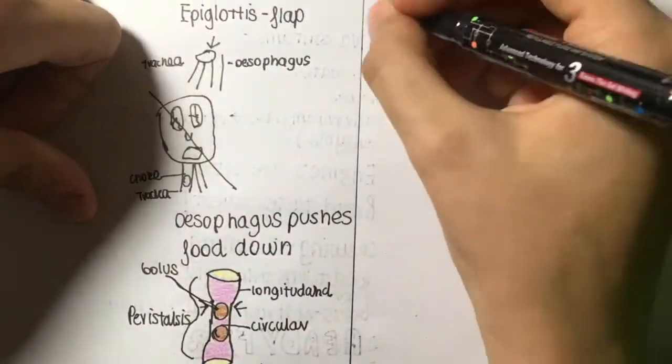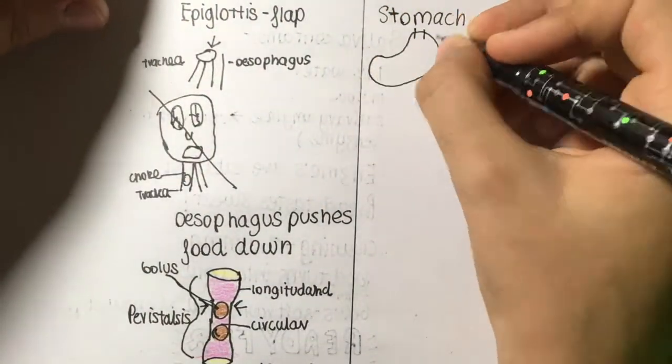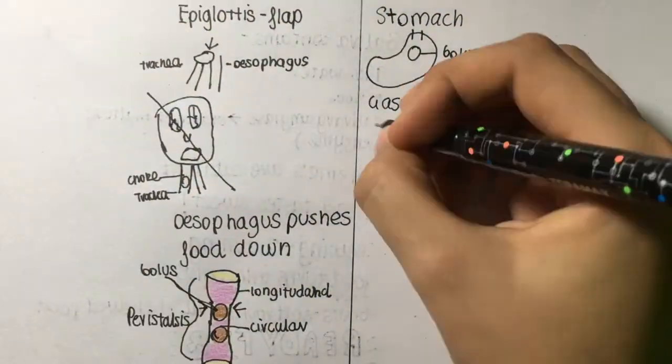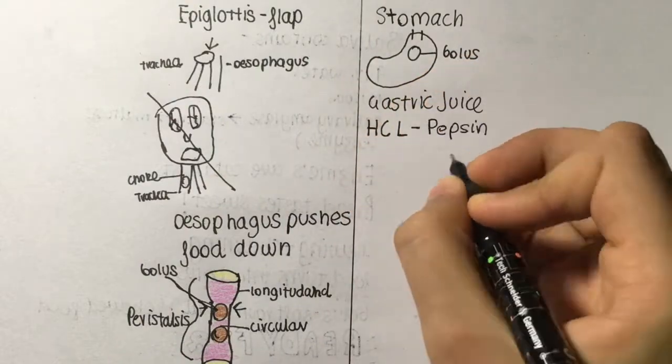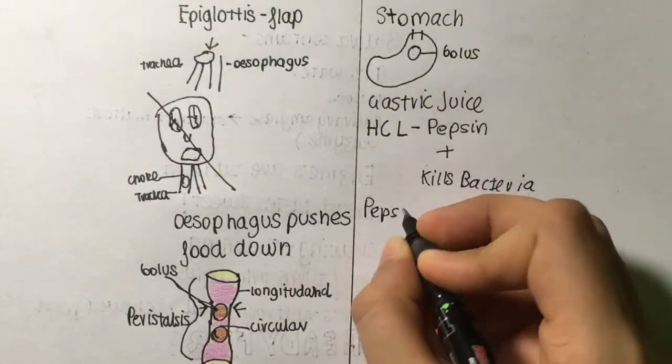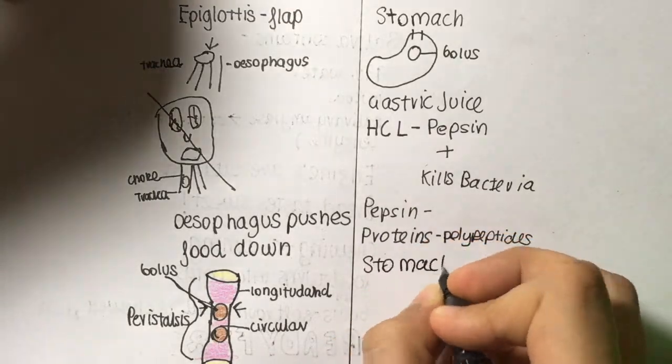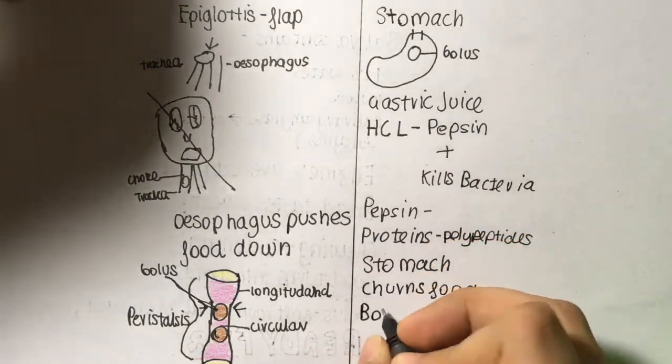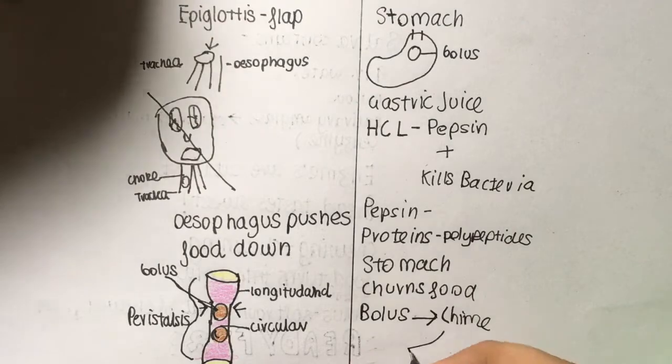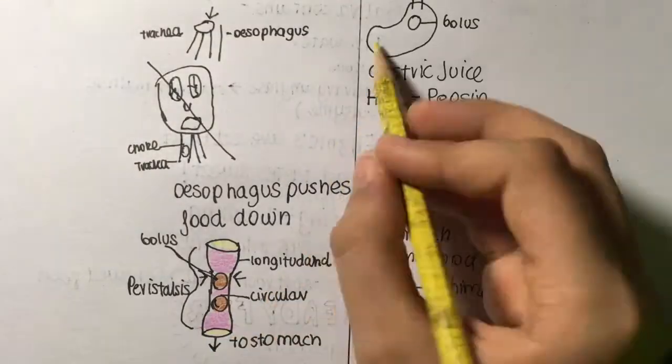When the bolus enters your stomach, HCl is secreted. HCl kills bacteria and creates an acidic environment for pepsin to act on proteins to make them polypeptides. The stomach also churns your food and makes it into an acidic liquid called chyme.